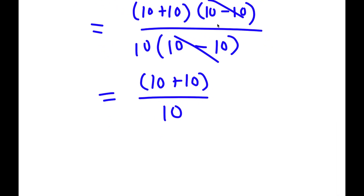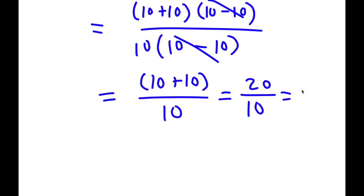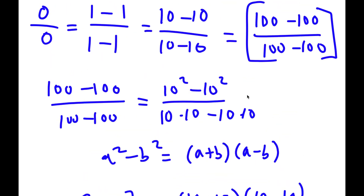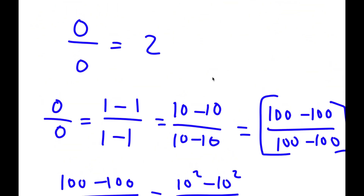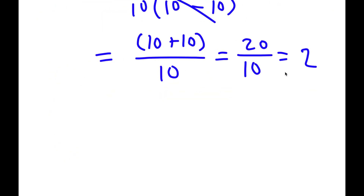So now I'm left with 10 plus 10 over 10. Now 10 plus 10 is the same thing as 20, so I have 20 over 10. And 20 divided by 10 is simply 2. So, as you can see, I just proved that 0 divided by 0 is equal to 2.